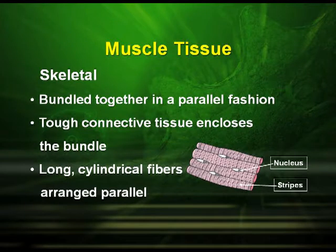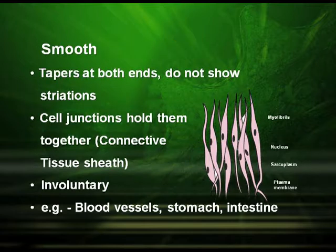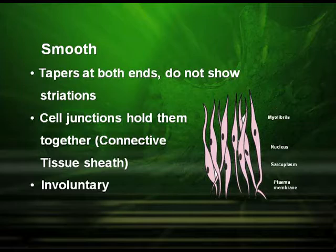Regarding the characteristics of skeletal tissues, they are bundled together in a parallel fashion — each of the cells runs parallel to each other and a tough connective tissue encloses the bundle. The smooth muscular tissues have a tapering end — both ends taper and they do not show any striations as found in the earlier tissues. They have cell junctions which hold them together, which is the connective tissue sheath, and they are also known as the involuntary tissues.